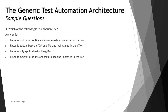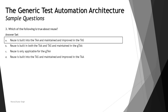The next question: which of the following is true about reuse? We recently covered a tutorial on reusing the TAS. Looking at the options: A — reuse is built into the TAA and maintained and improved in TAS; B — reuse is built into both TAA and TAS and maintained in the GTAA, which is invalid since GTAA and TAA refer to the same thing; C — reuse is only applicable for GTAA, which is incorrect since TAS can also be reused; D — reuse is built into TAS and maintained in TAA, which is the other way around since TAS comes later than TAA. The only correct answer is A: reuse is built into the TAA and maintained and improved in TAS, which is correct as per the syllabus.